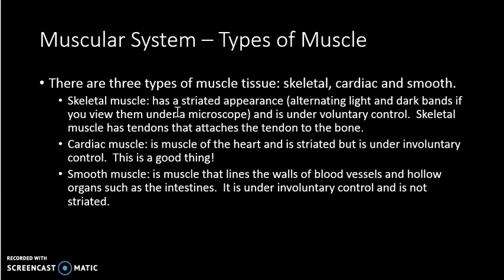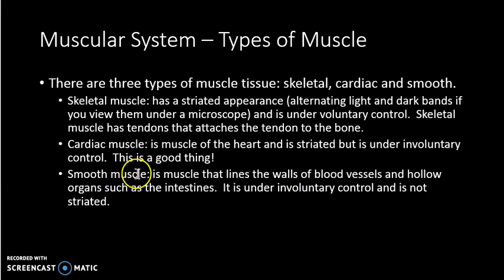Skeletal muscle is attached to the skeleton via tendons — those structures we learned about when we talked about joints. Cardiac muscle is found in the heart. It's also striated like skeletal muscle, but unlike skeletal muscle it is involuntary, meaning it happens automatically — which is a good thing, otherwise sleeping would be really difficult if you had to wake up every second to make sure your heart was beating. Smooth muscle is also involuntary but not striated. It lines the inside of vessels like blood vessels and hollow organs such as the intestines, assisting in a wave-like motion to help move substances through those organs and vessels.